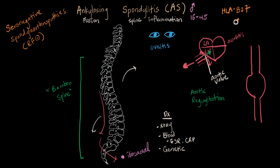There's also something we use not to diagnose AS but to track how it's progressing — how fast and how bad. It's called the BASDAI, which stands for the Bath Ankylosing Spondylitis Disease Activity Index, named after the place in England where it was discovered. This index allows us to track how the patient is doing over time and how they're responding to treatment.